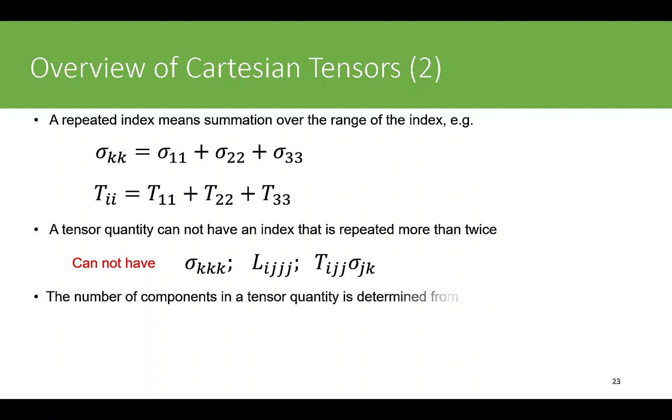The number of components in a tensor quantity is determined from this formula, which is given as range exponent order.